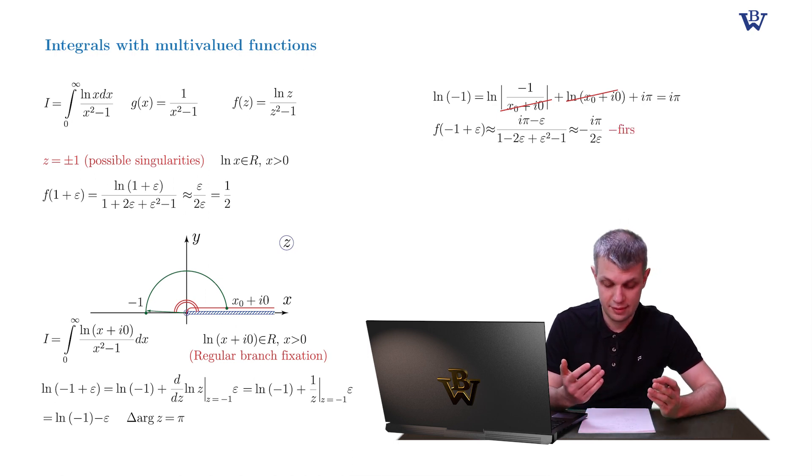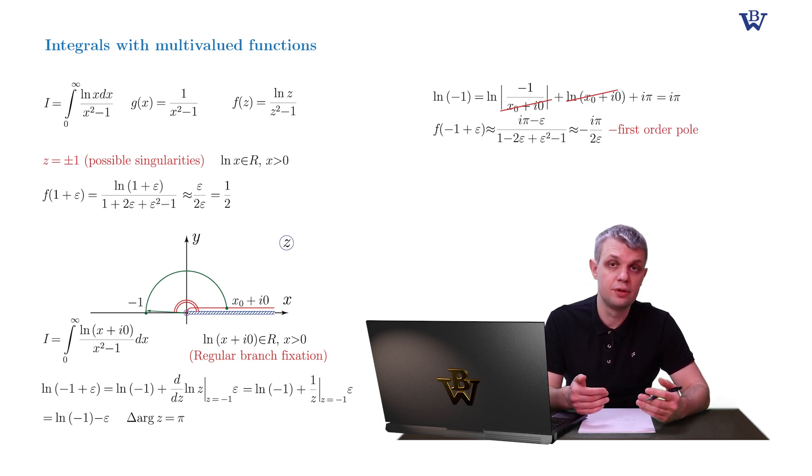This singularity is nothing but a simple pole, the first order pole. And after all these preliminary remarks we can proceed with the closure of the contour. As we pointed out earlier, the evenness of the single-valued part of our integrand hints us that this should be an opened up dumbbell.